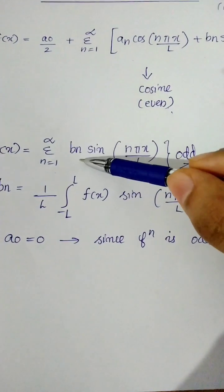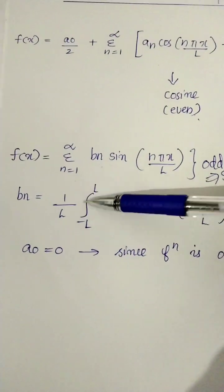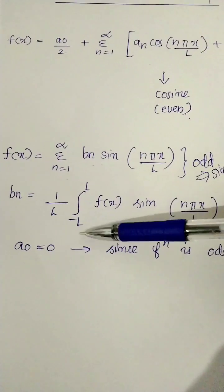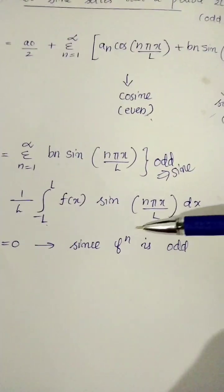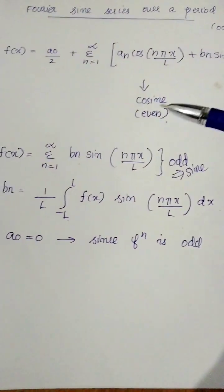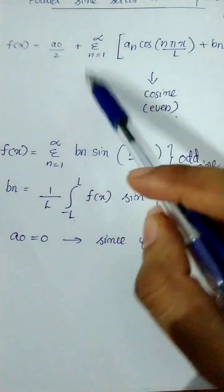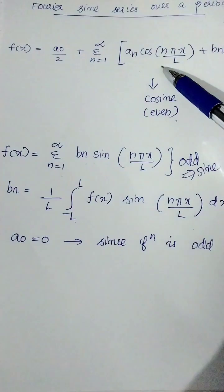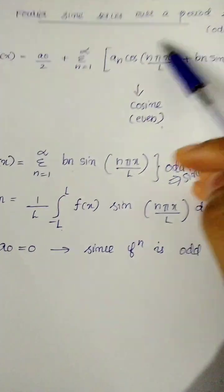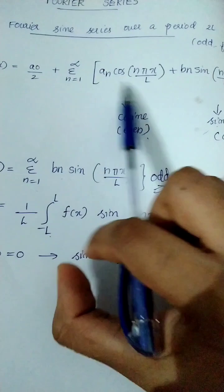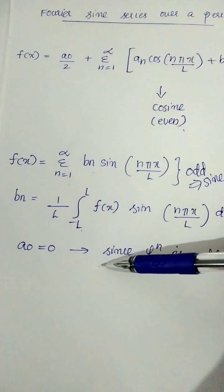Now we have to find bn. bn is equal to 1 by L, integral from minus L to L of f(x)·sin(nπx/L) dx. Now for the sine series, we start with a0 by 2. If we are using a sine function, we cancel this term — we will not need a0 by 2, because a0 equals zero.